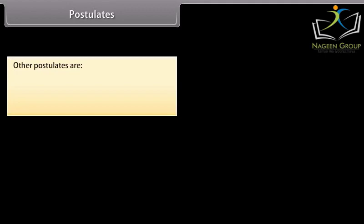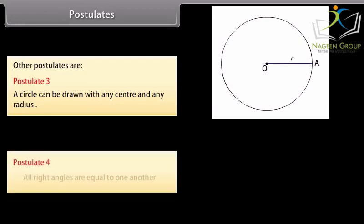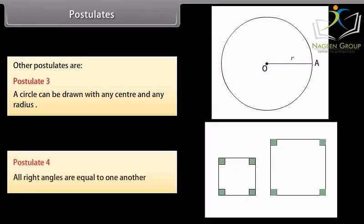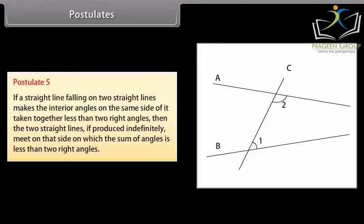Other postulates are: Postulate 3, a circle can be drawn with any center and any radius. Postulate 4, all right angles are equal to one another. And postulate 5 is: if a straight line falling on two straight lines makes the interior angles on the same side of it taking together less than two right angles, then the two straight lines, if produced indefinitely, meet on that side on which the sum of angles is less than two right angles.